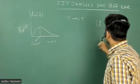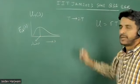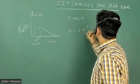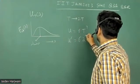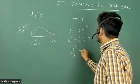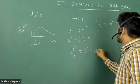So, now they have asked that what will happen to this lambda and this U when temperature is doubled. In first case, U is equal to sigma T to the power four. When temperature is doubled, it will become two to the power four T to the power four. So, U dash by U will become two to the power four, which is 16.